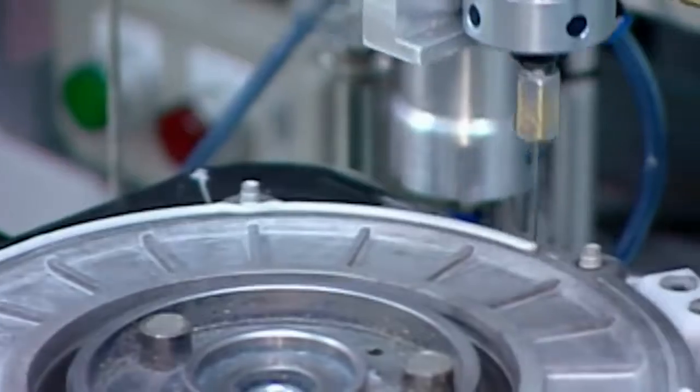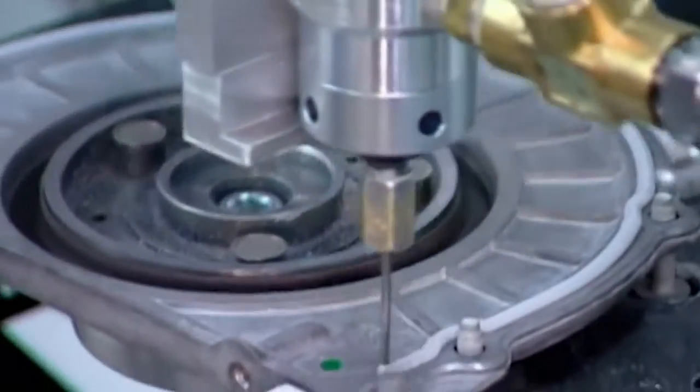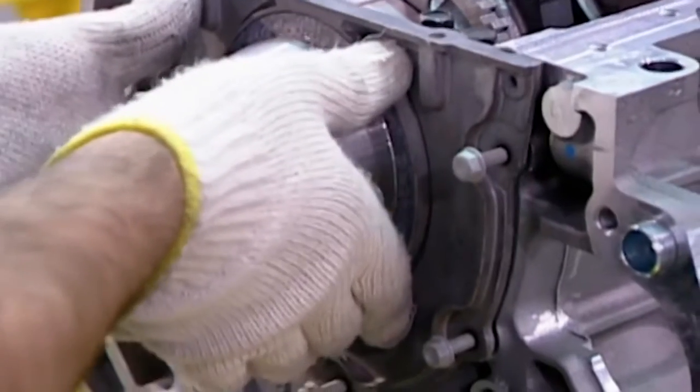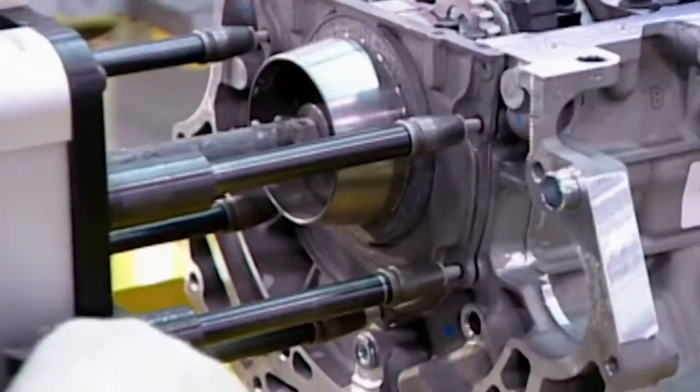Now workers can close up the back of the engine block. A robot applies sealant to the rear cover. Workers bolt it on manually with a tool called a multi-spindle torque gun.